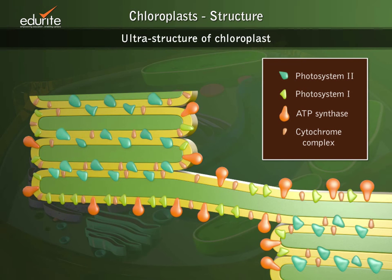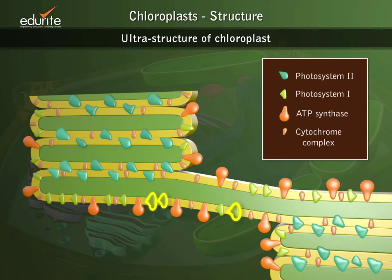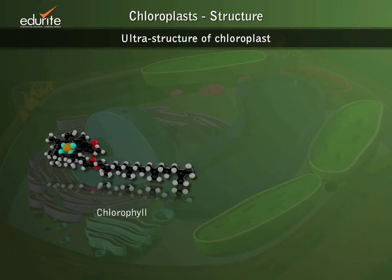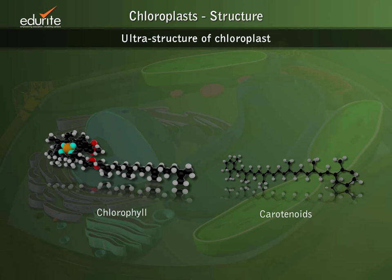The larger granules are called photosystem 2 or PS2, and the smaller granules are known as photosystem 1 or PS1. The inter-granal lamellae lack photosystem 2 but contain only photosystem 1. The thylakoids contain photosynthetic pigments, namely the green pigments chlorophyll A and B, and the yellow to orange pigments called carotenoids.